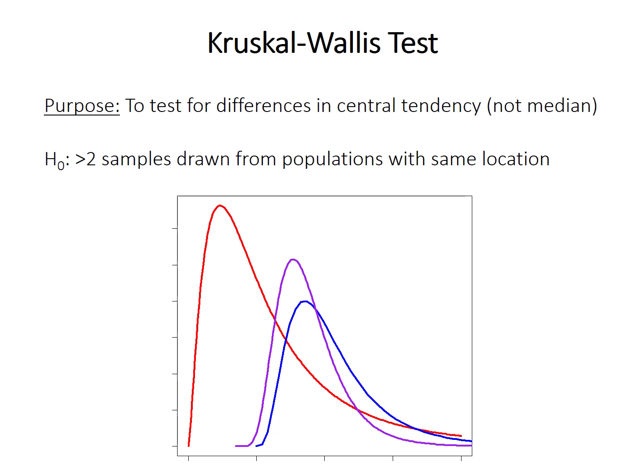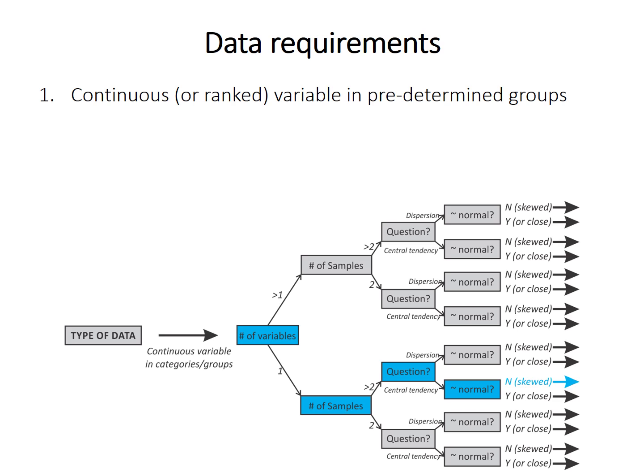The purpose of the Kruskal-Wallis test is to examine differences in central tendency. It works on rank order data, so it doesn't specifically test for the mean or the median, but the null hypothesis is that all samples are taken from populations with the same location — meaning the center of the distribution. The test requires that your data be continuous variables in predetermined groups or samples. Because it is a rank order method, you can also use ranked data.